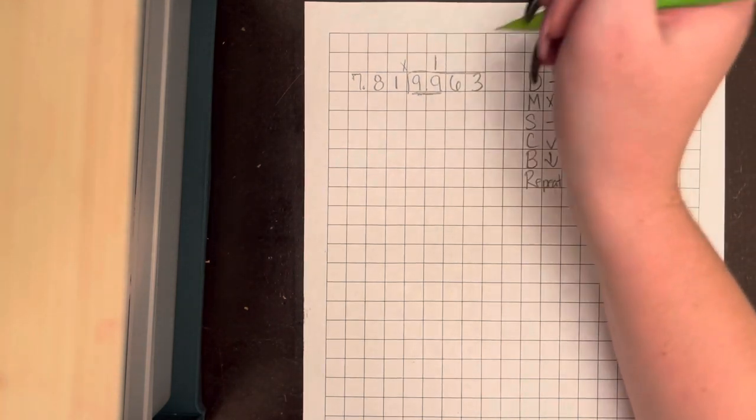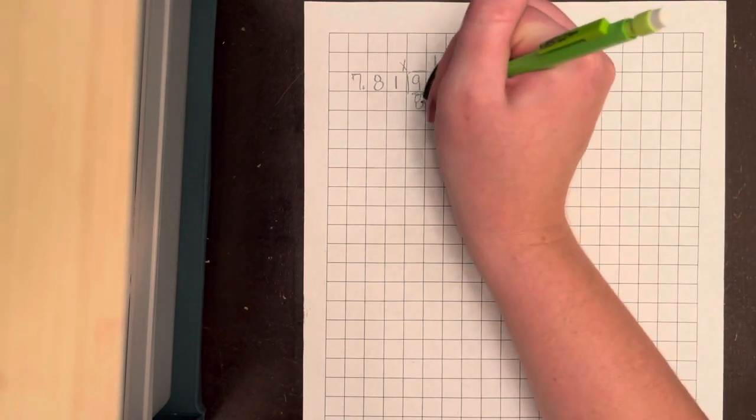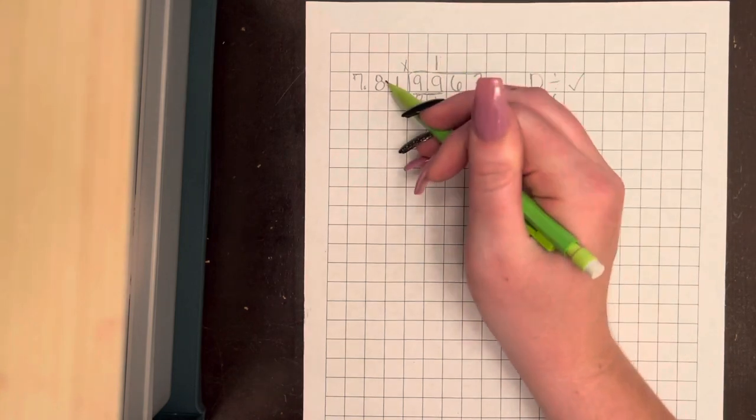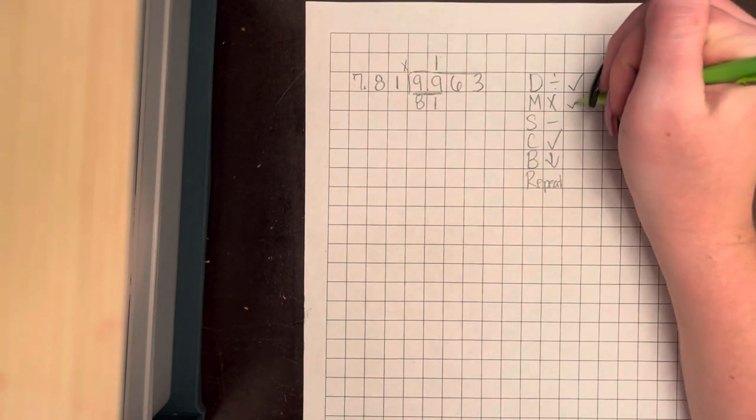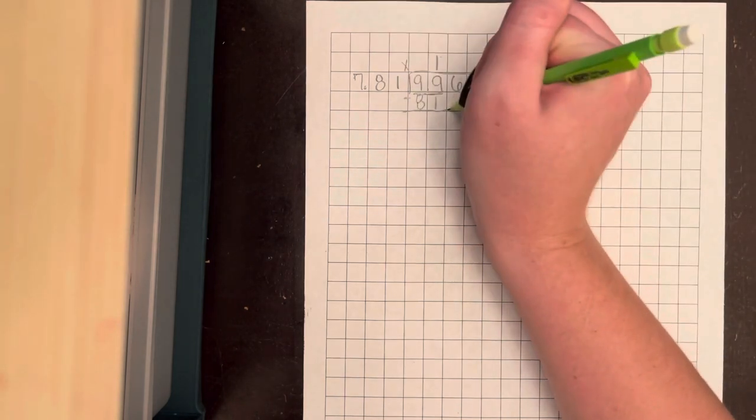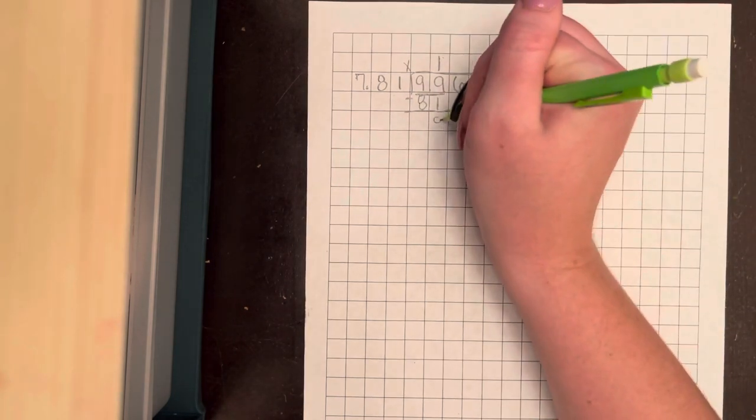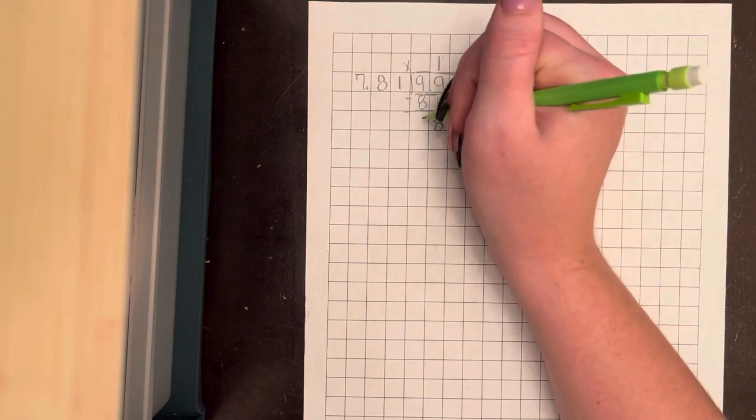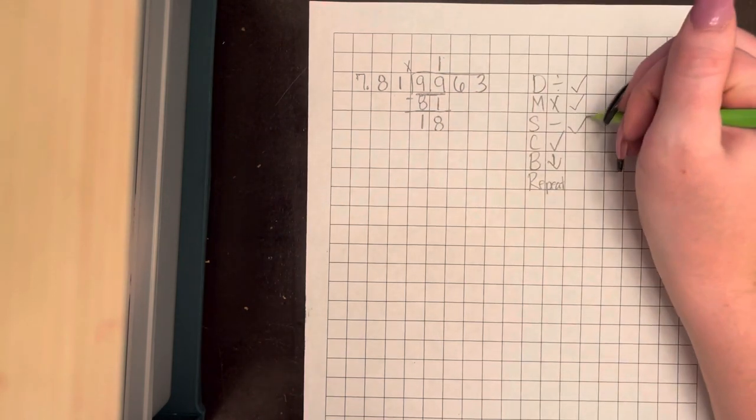And now we're going to multiply, so 1 times 81. Remember, we're multiplying always outside the house. Okay, now we're going to subtract. 9 minus 1 is 8. 9 minus 8 is 1.